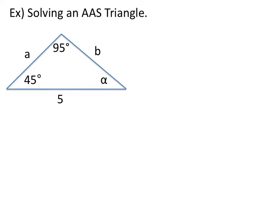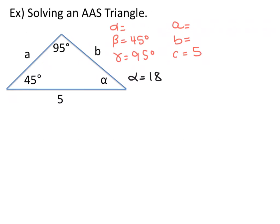We're going to use this to solve a triangle. Here we have a picture given. If you weren't given a picture, always draw your triangle so you know what information you have. We are given an angle-angle-side problem, so we know it's going to be Law of Sines. Write down all your given information. We have two of the angles, so we find the third: all three angles add up to 180 degrees, so angle alpha is 180 minus beta and gamma, giving us alpha equals 40 degrees.